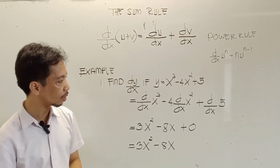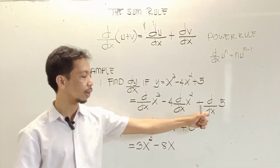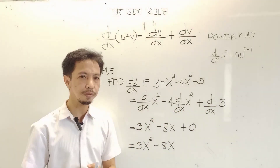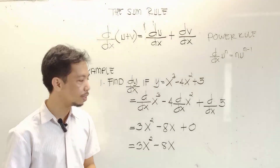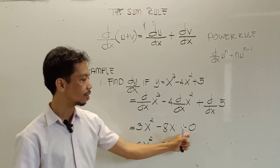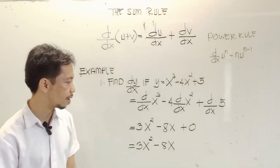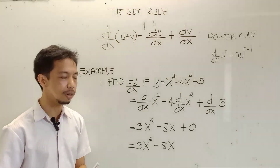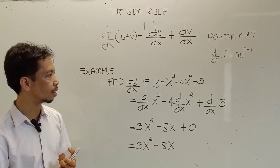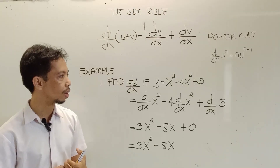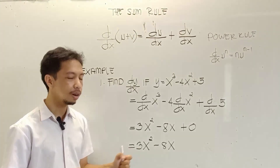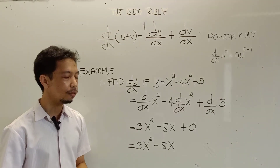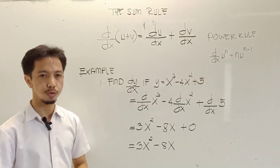Plus the derivative of a constant — in this case, 5. The derivative of any constant is always 0, so we have plus 0 for this term. Then simplify: 3x squared minus 8x. So the derivative of y equals x cubed minus 4x squared plus 5 is 3x squared minus 8x. That is how you find the derivative of a function using the sum rule.